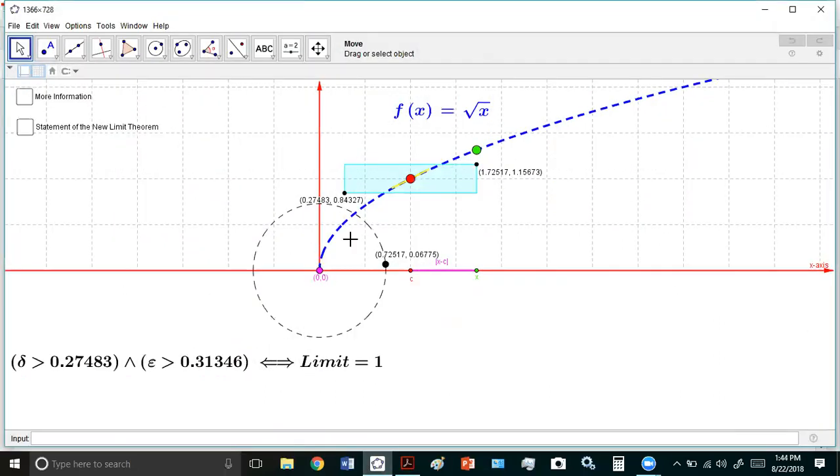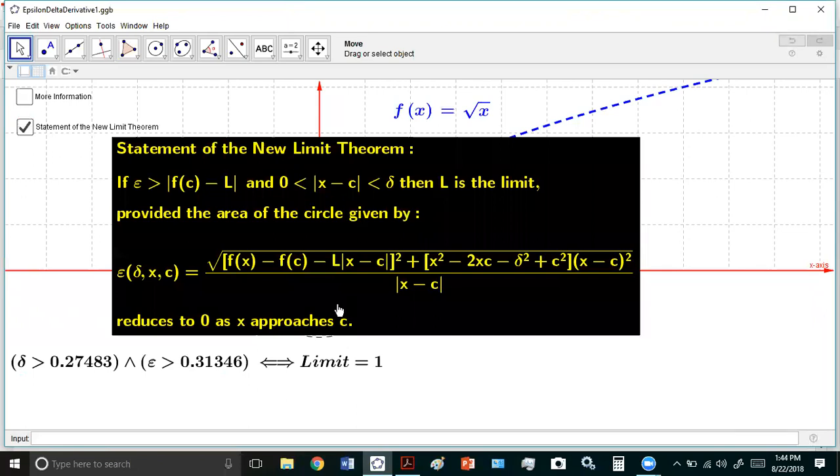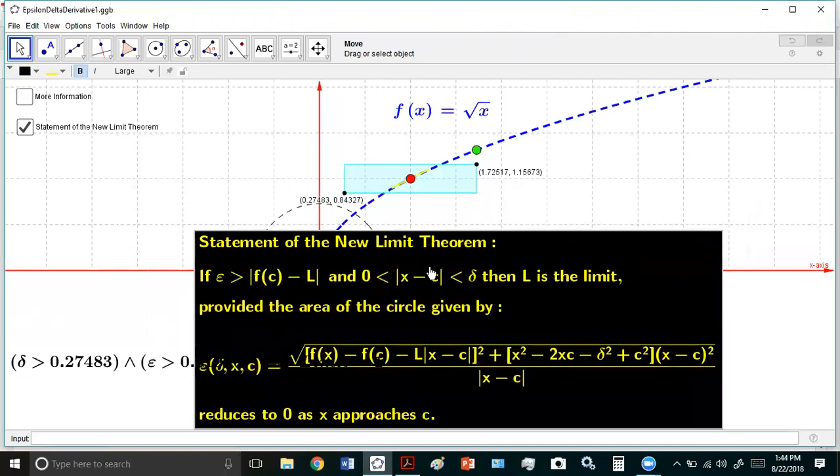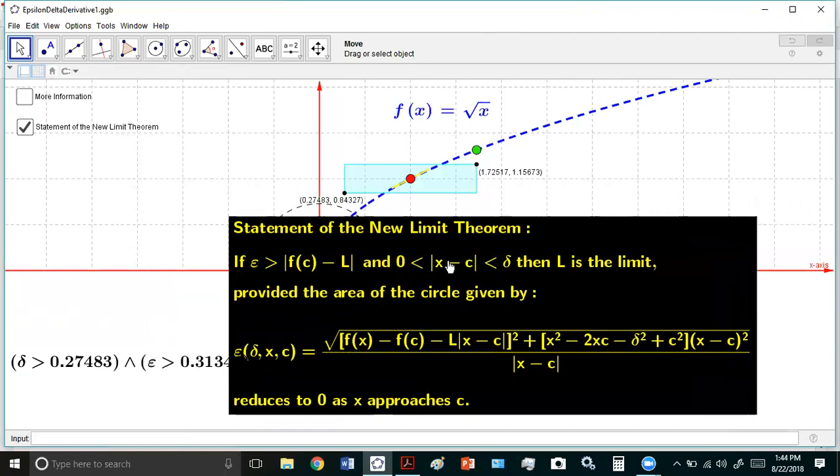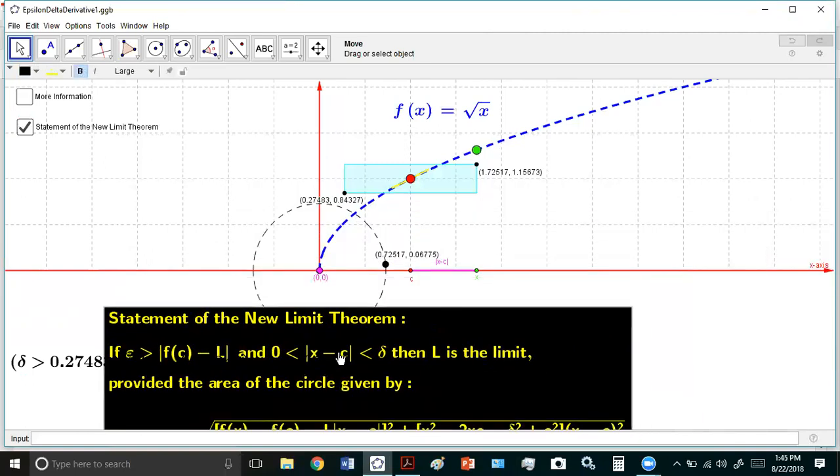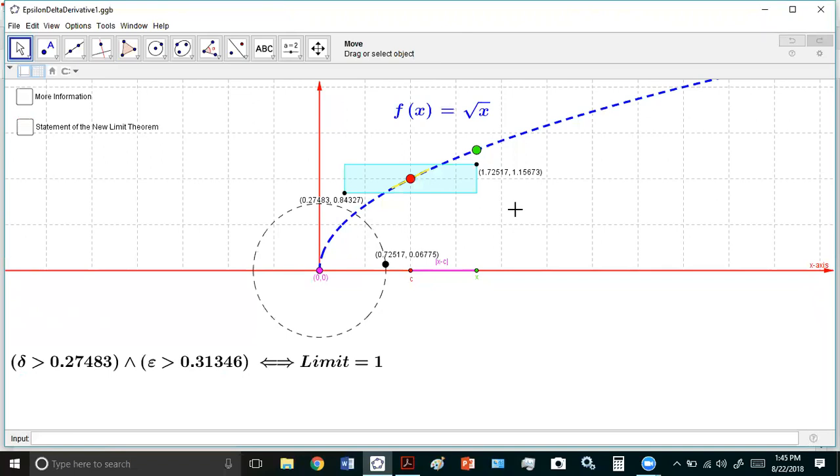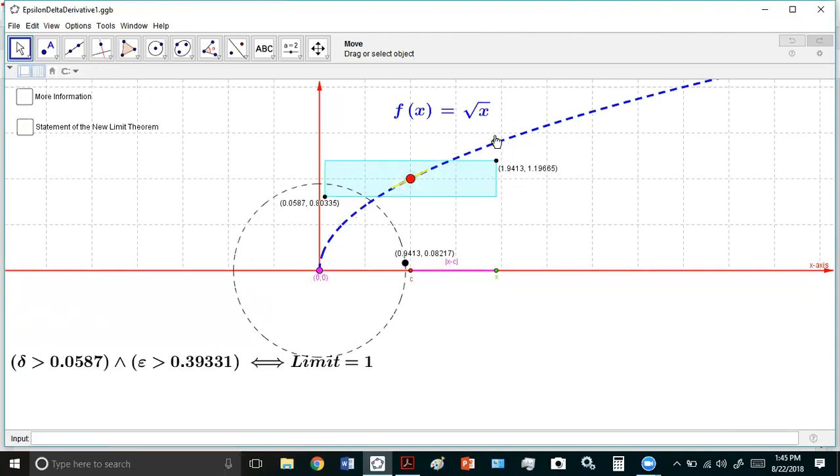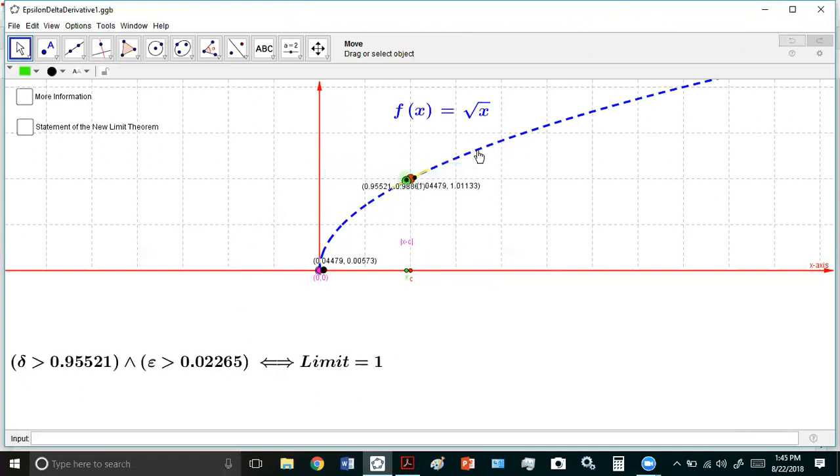Finally, you can actually show that the limit is true using my statement of this limit theorem, which the morons in mainstream academia rejected. But if you prove this once, you never have to worry about proving any limits anyway. And it's easy to prove this geometrically. See, and it works for everything. This is the beauty of the theorem. When you move closer to the point of tangency, the area of the circle gets close to zero.